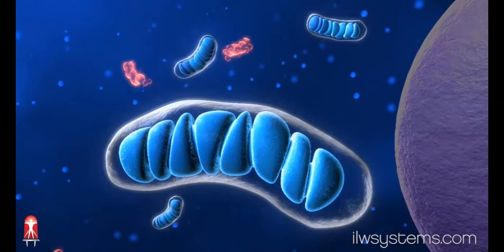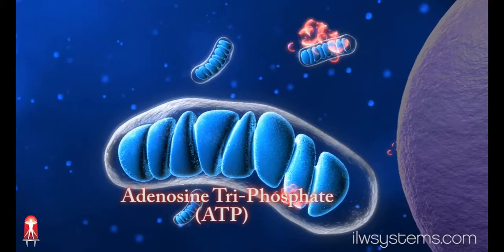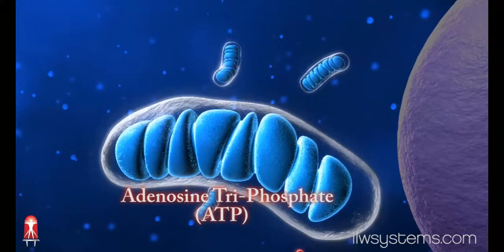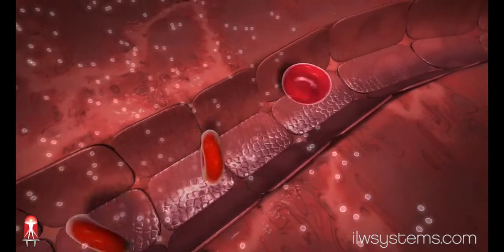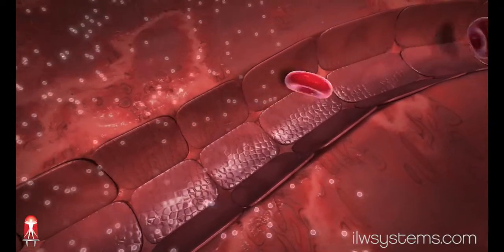The technical term for this energy is called adenosine triphosphate or ATP for short. ATP is formed from oxygen and glucose, both of which are carried to cells by blood flow.